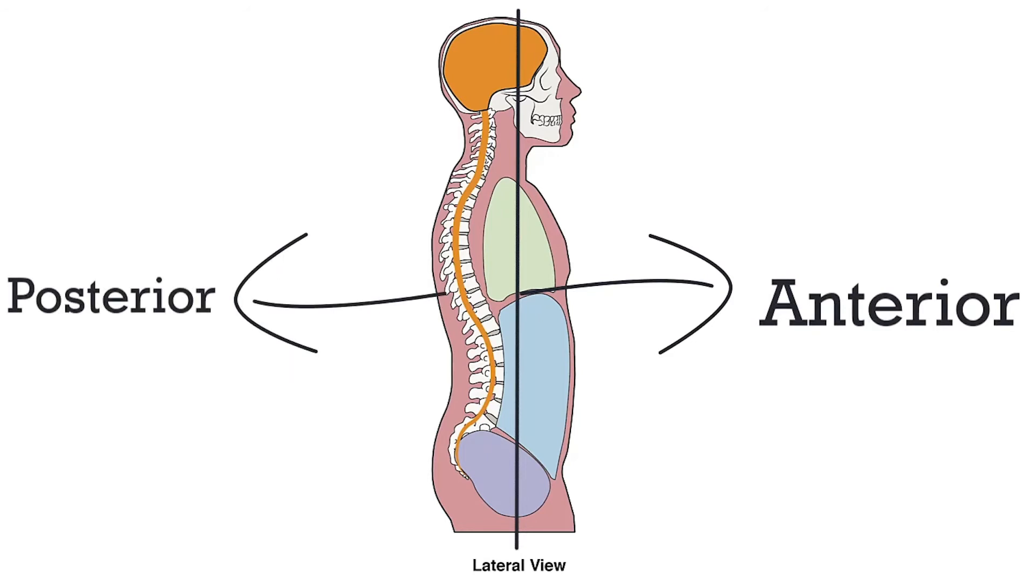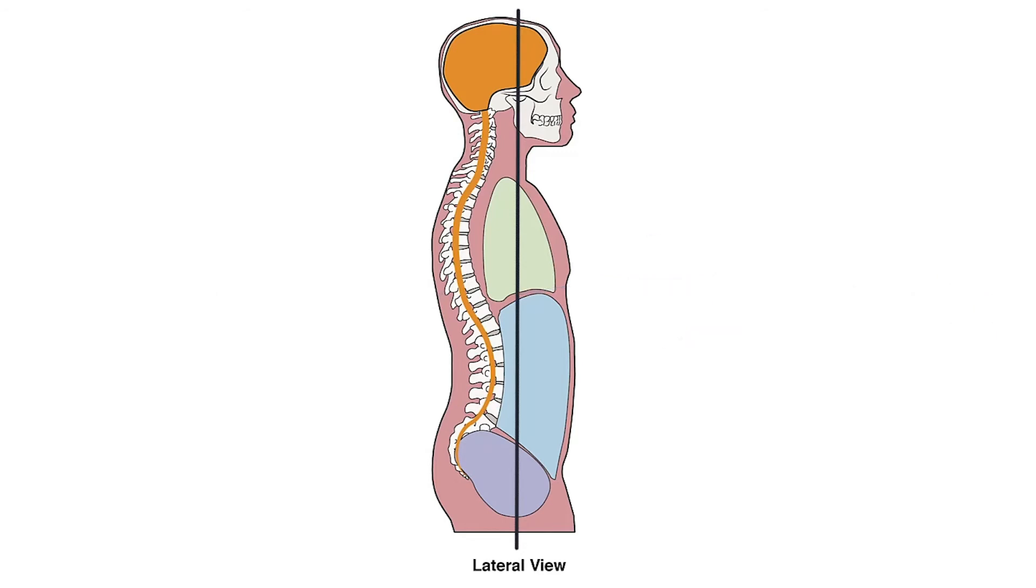Skipping down to the terms superficial and deep, we can understand these by recognizing the depth to the human body. For example, we can imagine that the heart is located in the thoracic cavity here. The heart is protected by bones in the chest region, such as the sternum and ribcage. These bones are considered more superficial, or closer to the surface, than the heart, deep in comparison, which is protected behind such bones.